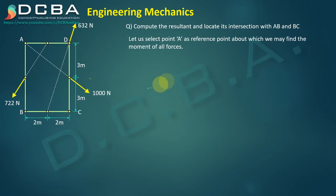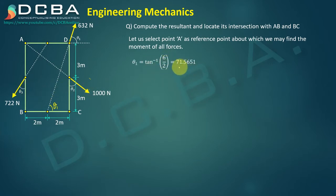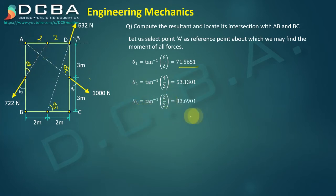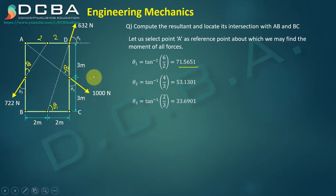We need to find angles θ1, θ2, and θ3. tan θ1 = 6/2, so θ1 = tan⁻¹(6/2) = 71.5651°. For θ2, tan θ2 = 4/3 (since it spans 2 m and 2 m), so θ2 = tan⁻¹(4/3) = 53.1301°. For θ3, tan θ3 = 2/3, giving θ3 = tan⁻¹(2/3) = 33.6901°.